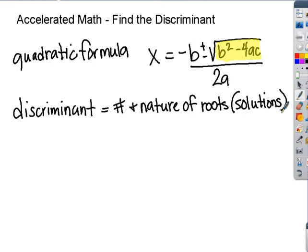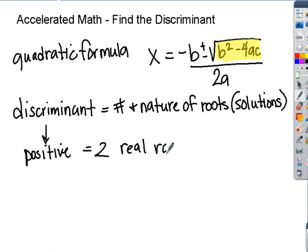So your discriminant is going to give you the number and nature of your roots. You've got a couple of options. If your discriminant is positive — so you work through b squared minus 4ac and you get a positive number — then that is letting you know you have two real roots or two real solutions.